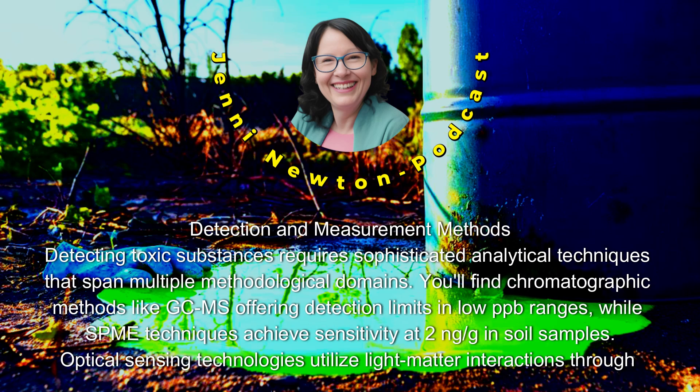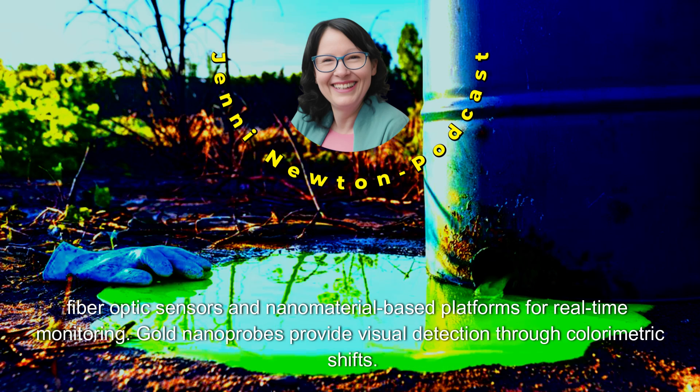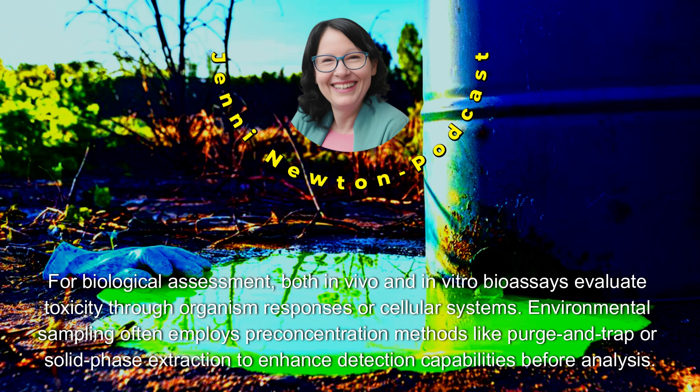Detection and Measurement Methods: Detecting toxic substances requires sophisticated analytical techniques that span multiple methodological domains. Chromatographic methods like GC-MS offer detection limits in the low parts-per-billion range, while SPME techniques achieve sensitivity at 2 ng/g in soil samples. Optical sensing technologies utilize light-matter interactions through fiber-optic sensors and nanomaterial-based platforms for real-time monitoring. Gold nanoprobes provide visual detection through colorimetric shifts. For biological assessment, both in vivo and in vitro bioassays evaluate toxicity through organism responses or cellular systems. Environmental sampling often employs pre-concentration methods like purge-and-trap or solid-phase extraction to enhance detection capabilities before analysis.